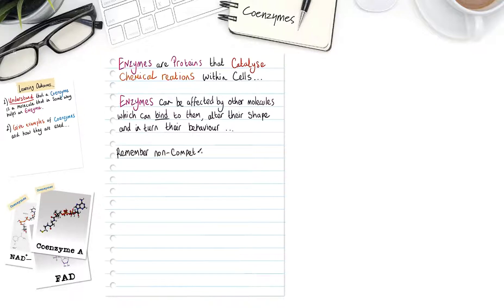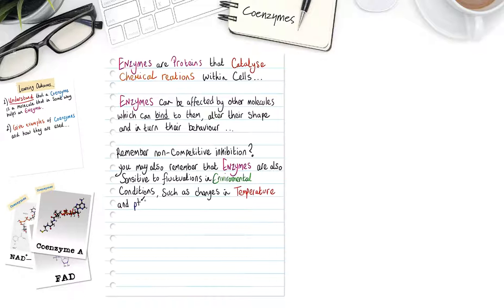Remember non-competitive inhibition? Well, you may also remember that enzymes are also sensitive to fluctuations in environmental conditions such as changes in temperature and changes in pH, both of which can denature enzymes.